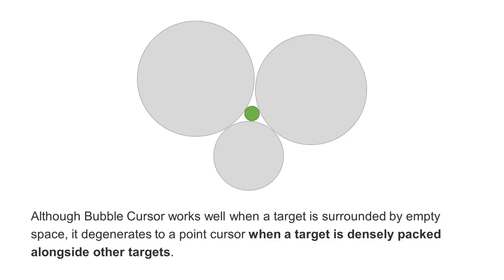Although bubble cursor works well when a target is surrounded by empty space, it degenerates to a point cursor when a target is densely packed alongside other targets.